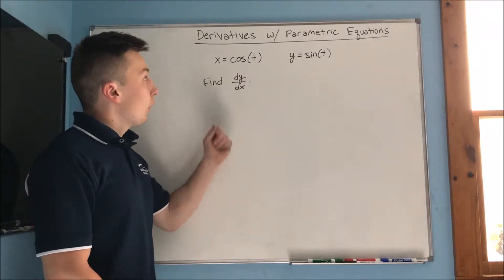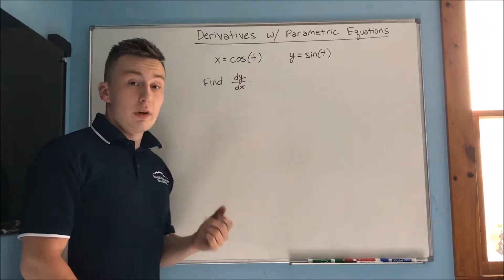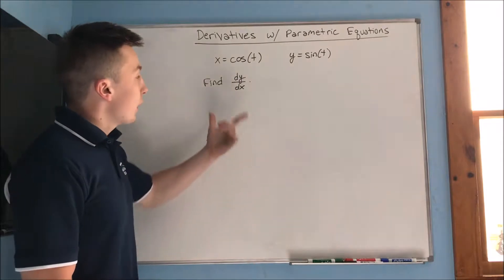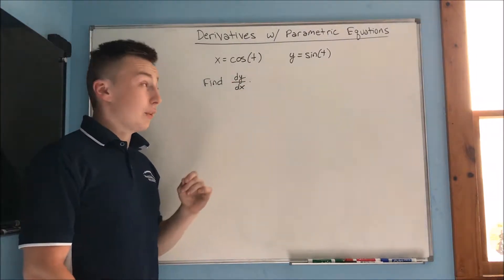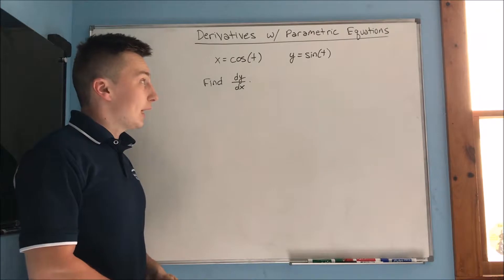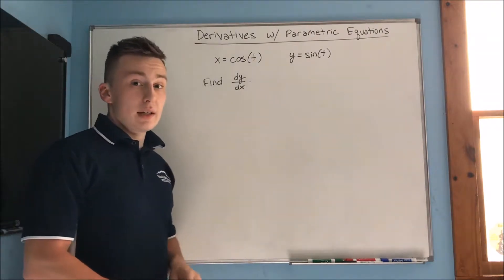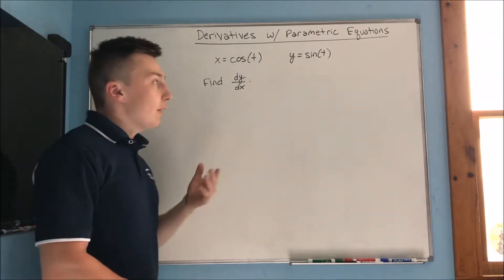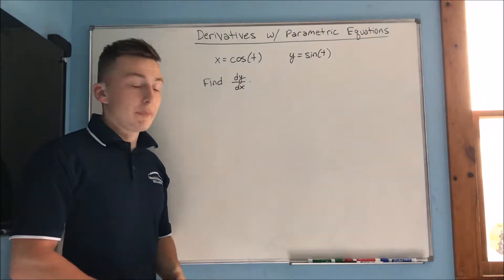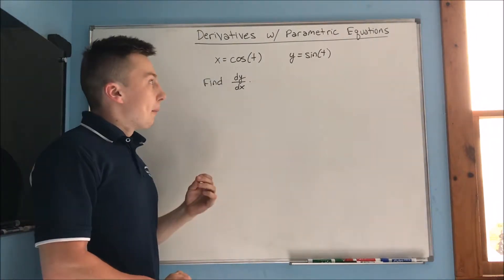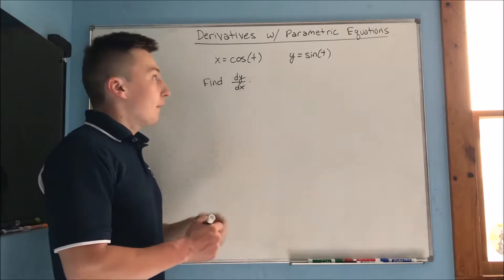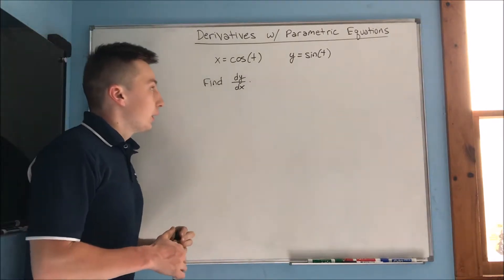In this video we're going to be going over derivatives with parametric equations. We have the parametric equations for a unit circle: x equals cos(t) and y equals sin(t), and we want to find dy/dx. Even though we're dealing with a parameter, our slope is still dy/dx.